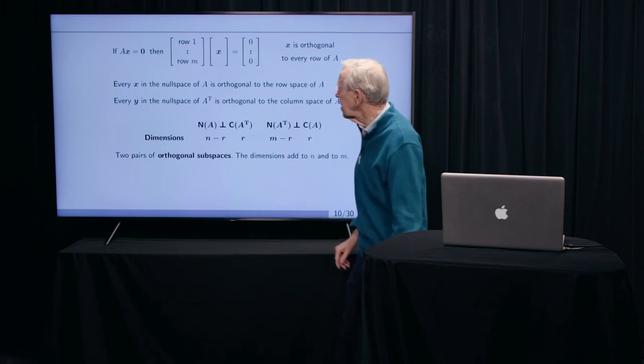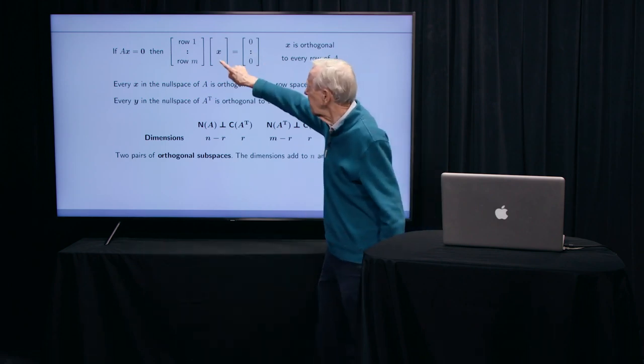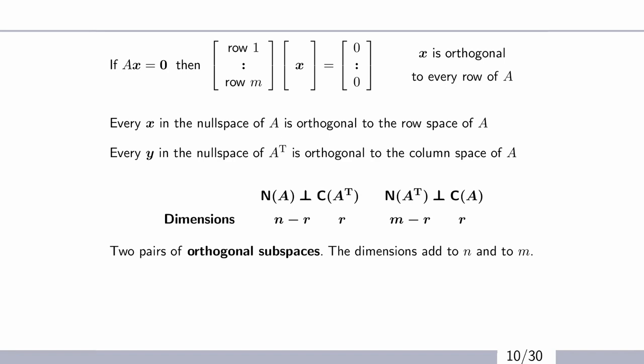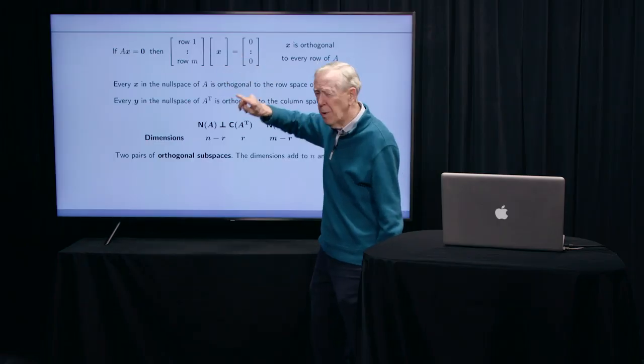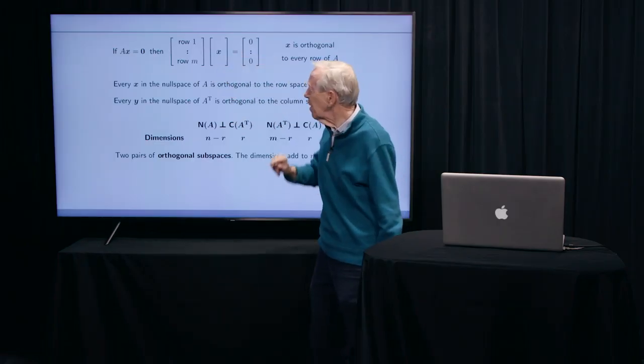And I'm wondering, can I get 0 for each row? Having a 0 there is telling me, in geometry, that that row is perpendicular, orthogonal, to that column. If a row dot product with a column gives me a 0, then in n-dimensional space, that row is perpendicular, 90 degree angle to that column x.